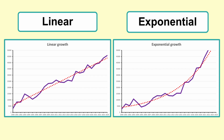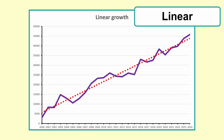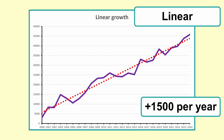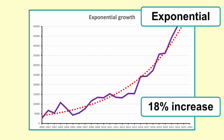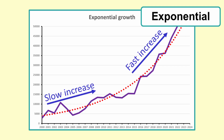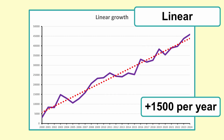Another term that is often used is exponential increase. This seems to imply a big increase, but the true meaning of exponential is that the relationship between subsequent values is multiplicative rather than additive. When each value increases by the same amount this is called a linear trend. If each value is multiplied by an amount to get to the next one, this is an exponential trend. You can see on this graph that exponential growth can be quite slow at the start and increase as time passes, whereas linear growth always grows by the same amount.